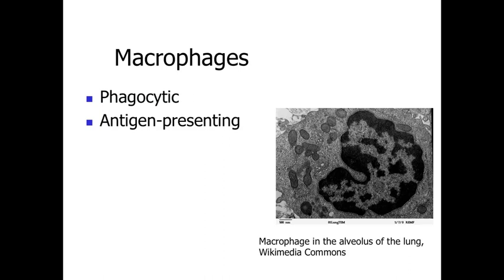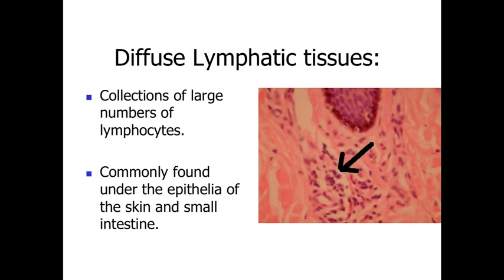Finally, we have macrophages — a cell we've talked about a lot in this course. Macrophages have some antigen-presenting capabilities, so they can gobble things up and still present them along their surface, but they're primarily a phagocytic cell. They gobble up debris and damaged regions of the body, and attack areas that have been flagged with an antibody as being a foreign material. They're essentially an indiscriminate cell responding to the activity of other cells within the immune system.